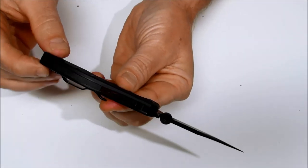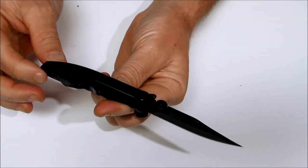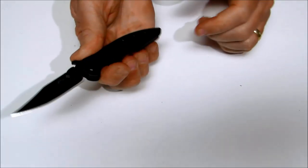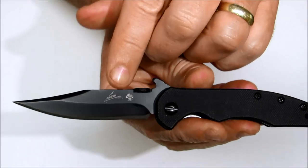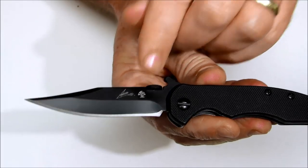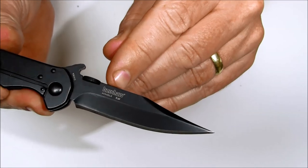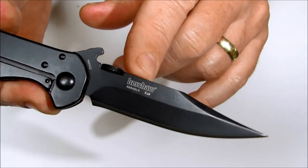You have a solid backspacer as in virtually all of the Emerson knives. You have a jimped thumb ramp. Here you have the Emerson logo with the Emerson skull. The opposite side, Kershaw and the model number.